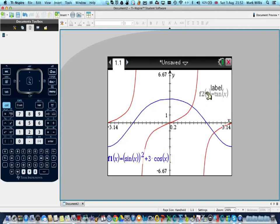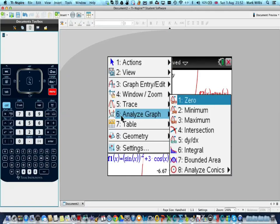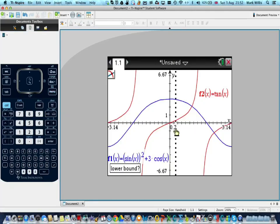What I want to know is where they intersect, which is there and there. So using the menu, analyze the graph, number six, number four. You take it slightly to the left rather than to the right. You get one more point in. I'm going to put that over there out of the way.